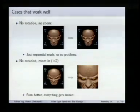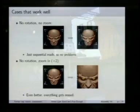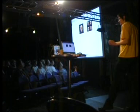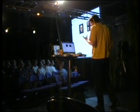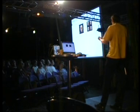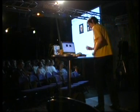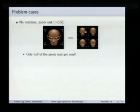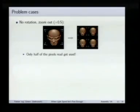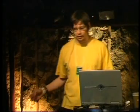Cases that are more problematic are, for example, when you zoom out. Only half of the pixels read get used when you zoom out by a factor of one half, because every odd line of that image won't be accessed at all. In the even lines that do get displayed, just every second pixel is actually used for the destination image. So half of the data in each cache line that's fetched is actually being used, and the other half is just lying around. This is obviously very bad.